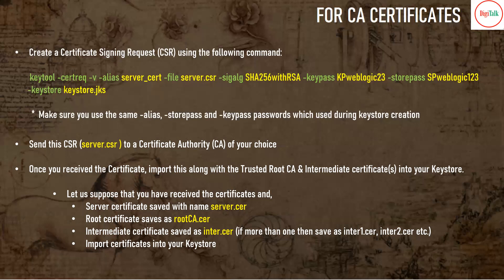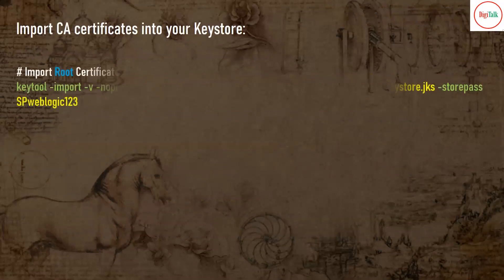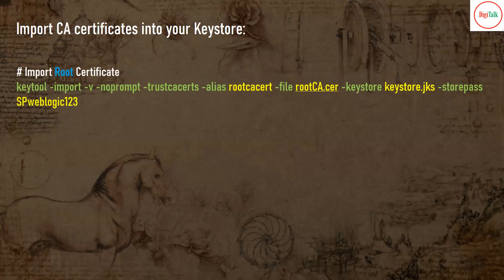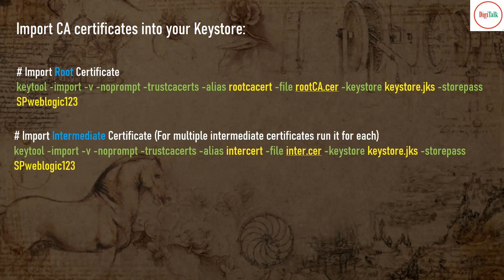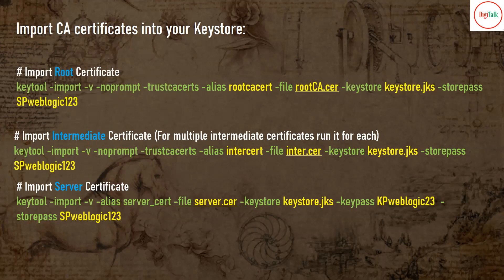Suppose you have a server certificate saved as server.cer, a root certificate saved as root.cer, and an intermediate certificate saved as inter.cer — note there can be more than one intermediate certificate. Import all certificates into your keystore in this sequence: first import the root certificate, then import the intermediate certificate using the same command (repeat for additional intermediate certs), and finally import the server certificate. Always follow this order: root, intermediate, then server.